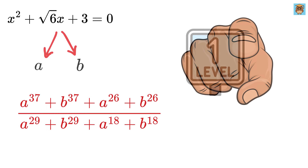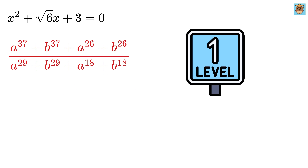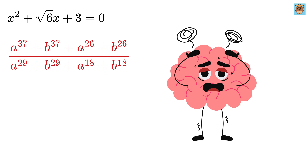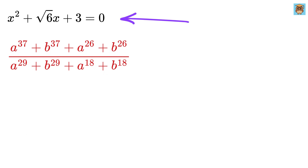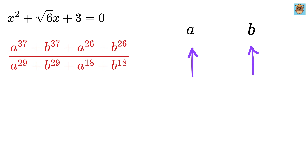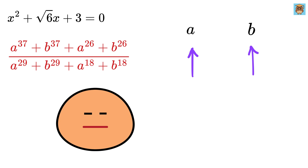Can you solve it? In the first level, which is level 1 thinking order, we will use 20% of our brain, where as soon as we see a quadratic equation, the very first thing that comes to our mind is finding the values of the roots. I will not bore you by solving this quadratic equation.